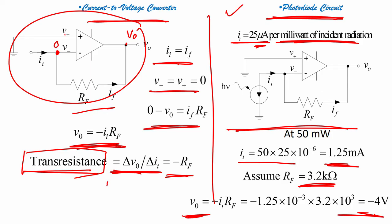So this is how the current-to-voltage converter works, and the photodiode circuit is an example of a current-to-voltage converter. We have also seen how the differential amplifier works.